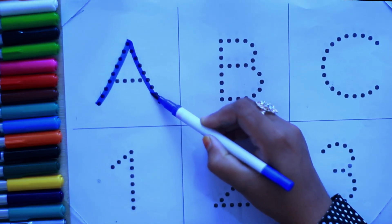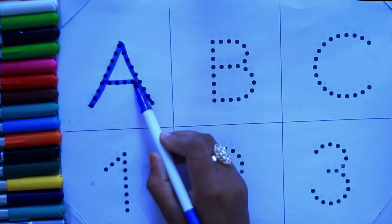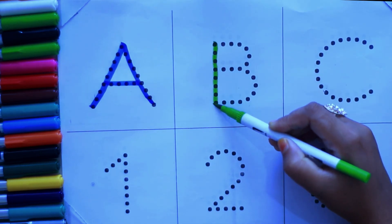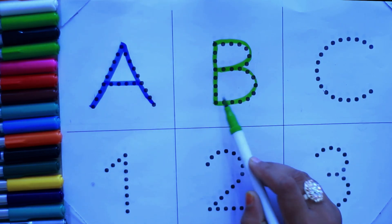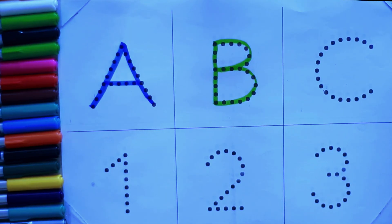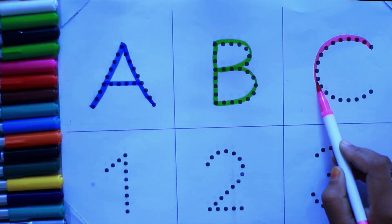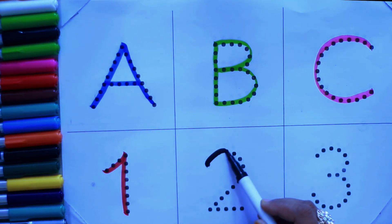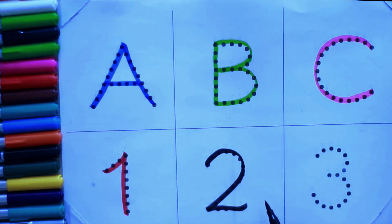Blue color A, A for apple. Green color B, B for banana. Pink color C, C for crow. Red color 1, O-N-E 1. Black color 2, T-W-O 2. Purple color 3, T-H-R-E 3.